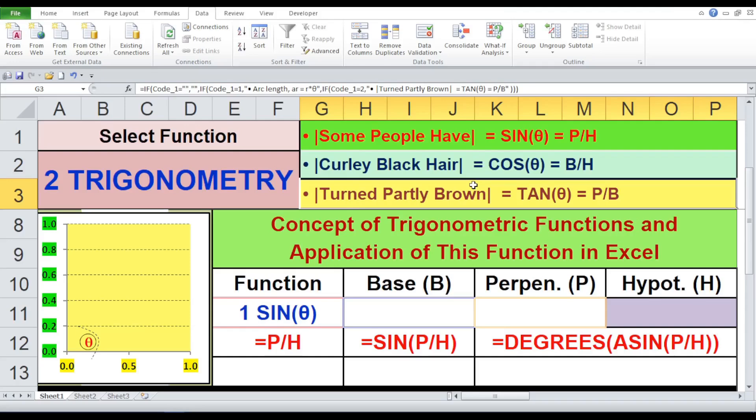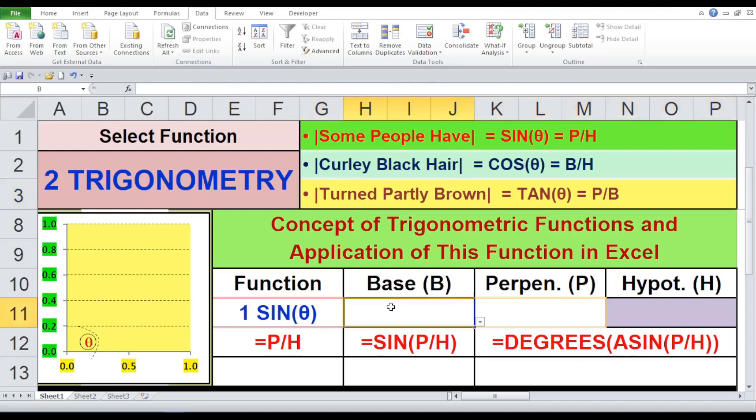In second part, curly black hair: Curly stands for cos, Black stands for base, Hair stands for hypotenuse. Therefore cosine equals base by hypotenuse. In third part, turned partly brown: Turn stands for tan, Partly stands for perpendicular, Brown stands for base. Therefore tangent equals perpendicular by base. In our excel sheet, we've created a simple table to visualize these concepts.